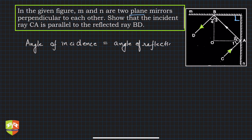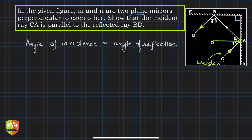If we have a plane mirror and draw the normal perpendicular at the point of incidence — in this case, the point of incidence is A — at that point I have drawn a normal at 90 degrees. Angle 1 is the angle made by the incident ray, and the reflected ray goes from A toward the second mirror.